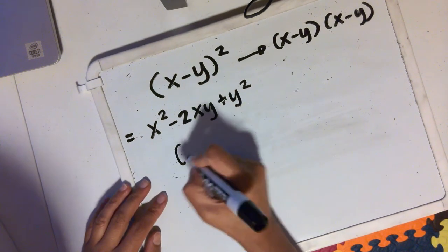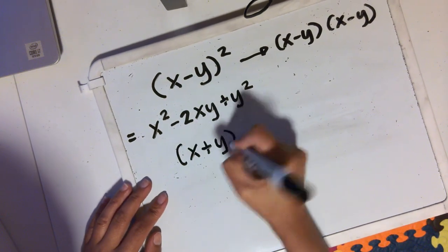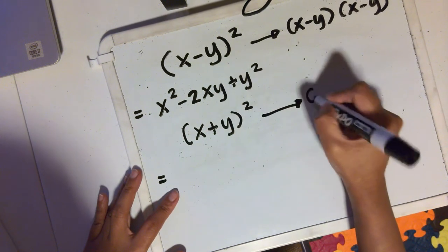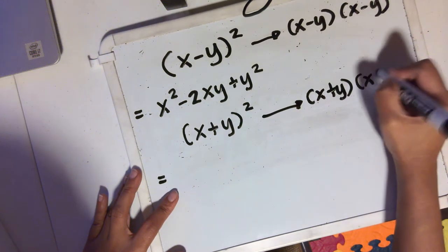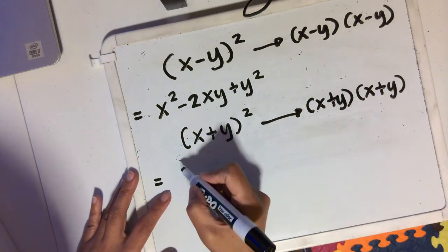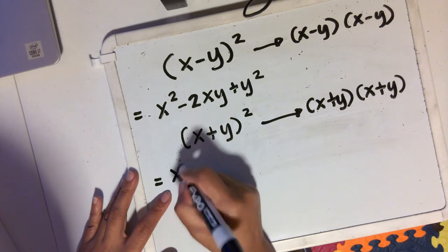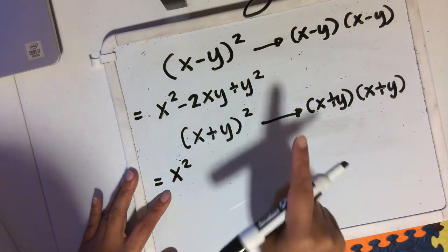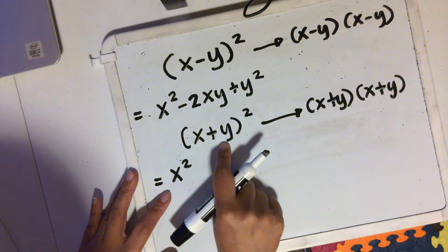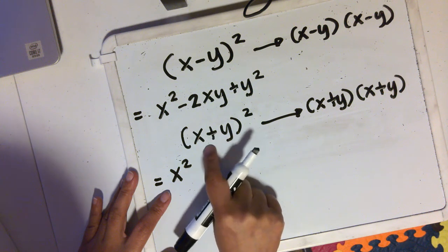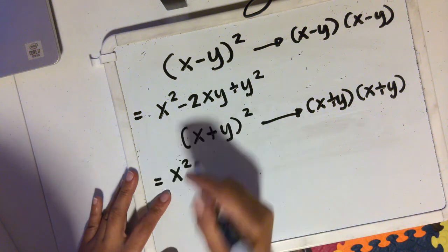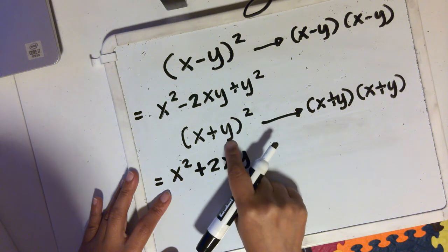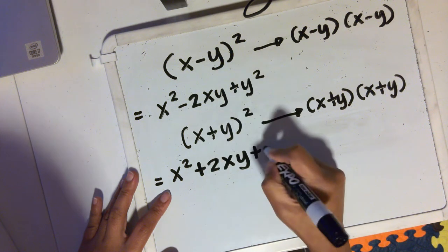Now, what happens if it's a plus? Let's say you have x plus y squared. Let's see what's the difference. This is the same as x plus y times x plus y. So you square the first term. You multiply the two terms, and whatever product you get, you multiply that by 2. So x times y is xy — because they're both positive — multiply that answer by 2, then you have positive 2xy. And then you square the last term, so positive y squared is plus y squared.